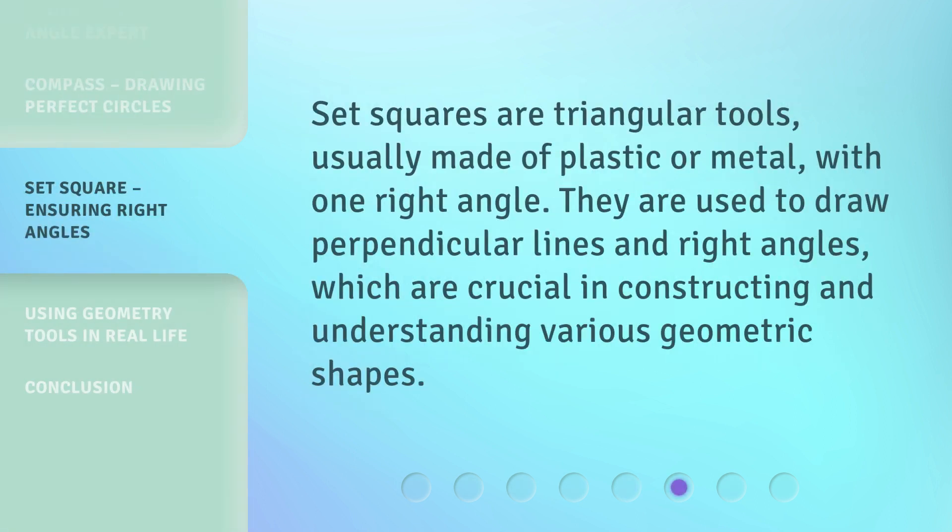Set squares are triangular tools, usually made of plastic or metal, with one right angle. They are used to draw perpendicular lines and right angles, which are crucial in constructing and understanding various geometric shapes.